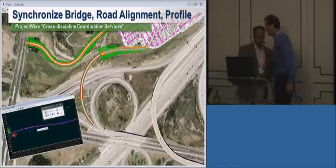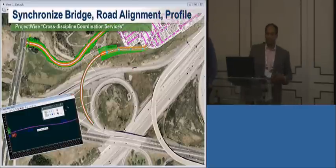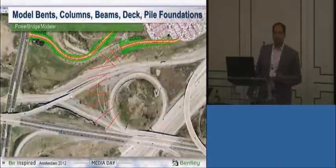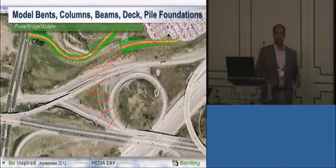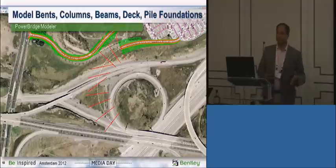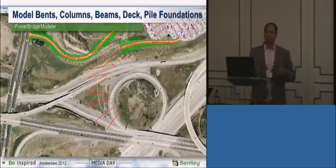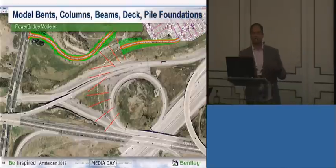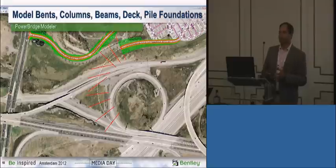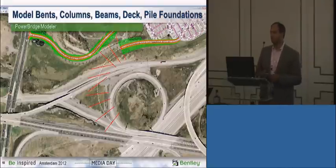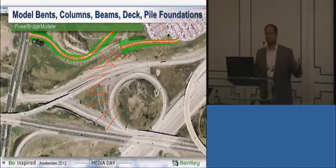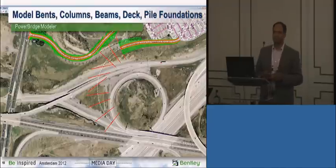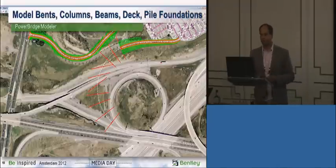Cross-discipline coordination services are how the road engineer talks to the bridge engineer, how the geotechnical engineer talks to the road engineer, and how the site engineer communicates with others. This service transfers information across disciplines, but only the information relevant to the receiving party — for example, a bridge engineer doesn't care about asphalt quantities; he wants to know the horizontal alignment, vertical alignment, and profile.